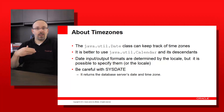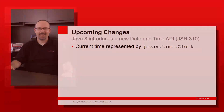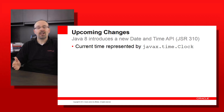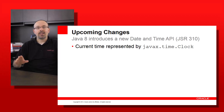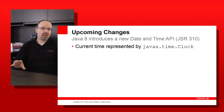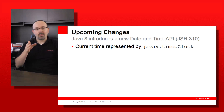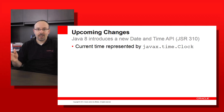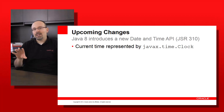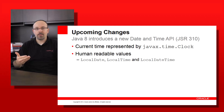Now let's have a look at the upcoming changes in Java 8. The datetime API currently available in Java Standard Edition is a bit cumbersome to use and there's a learning curve. So for Java 8, a JSR has been introduced just to fix that. This JSR is JSR 310. In Java 8, to represent the current date and time, you will use not java.util.Date, but java.time.Clock. There will be classes that enable you to have human-readable values for date and time.